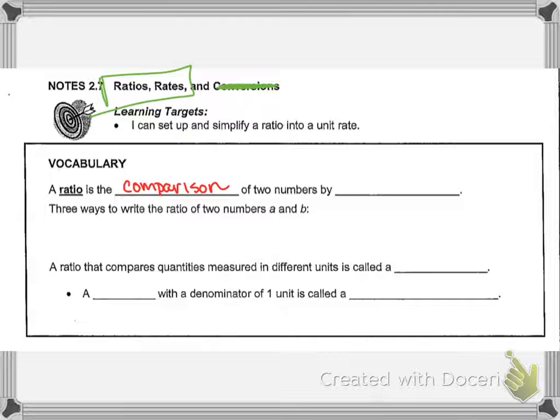So a ratio is a comparison of two numbers by division. Anytime we have a fraction, it's also considered a ratio. Now these have to have the same units in order to be considered a ratio. So feet to feet, inches to inches, money to money - you're comparing two things.